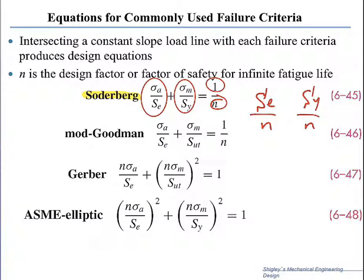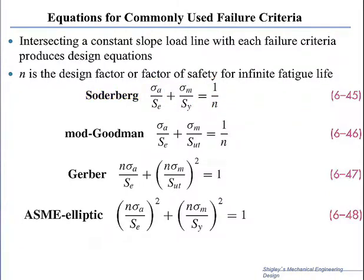So on the right-hand side, instead of one, we will have one over n. The next one is Modified Goodman. In Modified Goodman, the damage due to the alternating remains the same, but the damage due to the steady component is ratioed not to the yield anymore, but to the ultimate. Therefore, the sum of the two damages should not exceed one over n for a factor of safety of n.